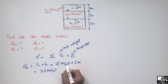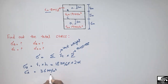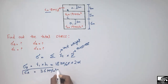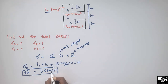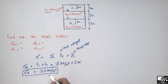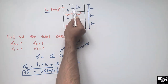After cancelling the units, we obtain a stress value of 36 kN/m² at point A.